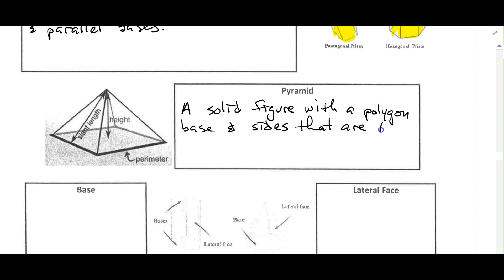The sides are triangles that meet at a point. Here we have a pyramid and we can see here's the base. Since this base is a square, we would call this a square pyramid.